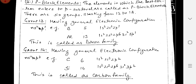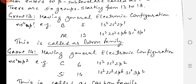P-block has 6 groups starting from 13 to 18. Group 13 includes Boron, Aluminium, Gallium, and Thallium. We need to remember two main elements: Boron and Aluminium, with atomic numbers 5 and 13 respectively, along with their electronic configurations.